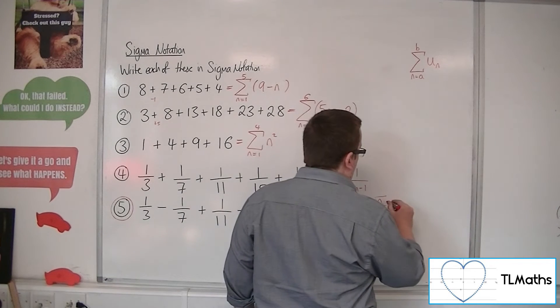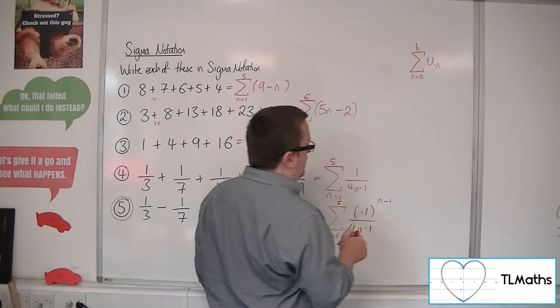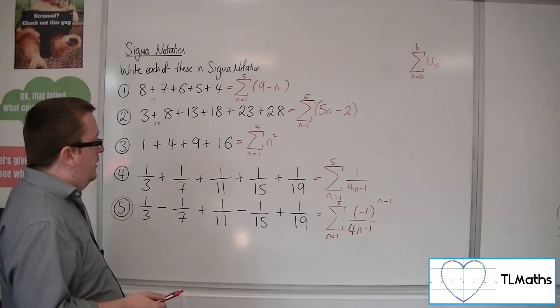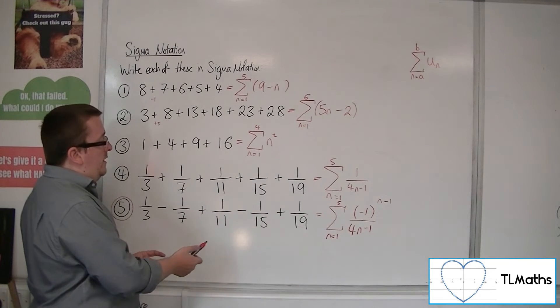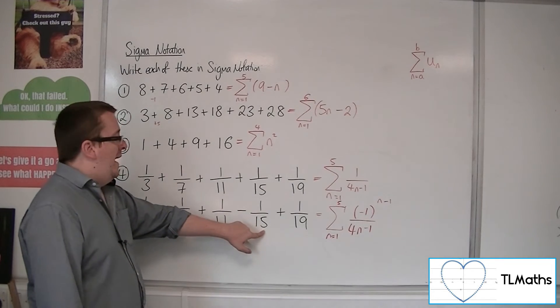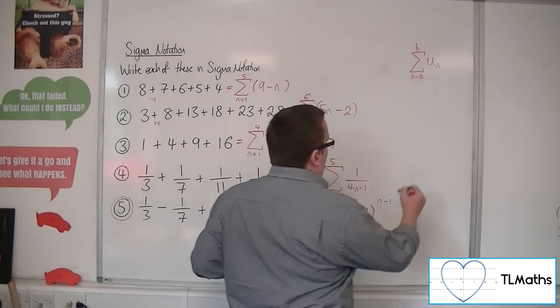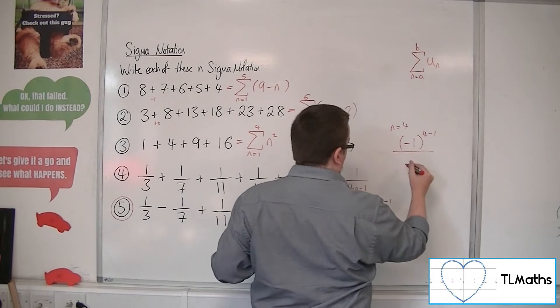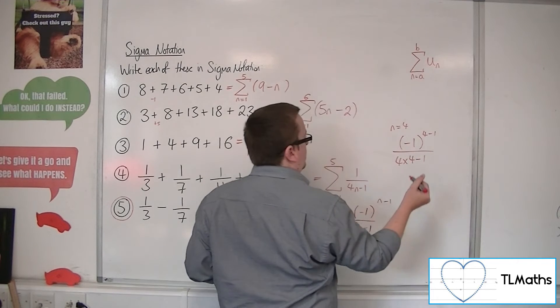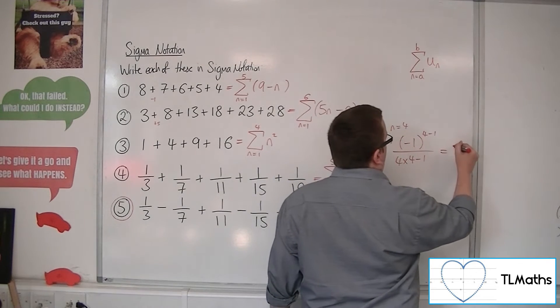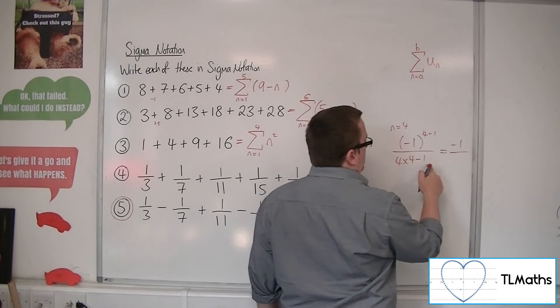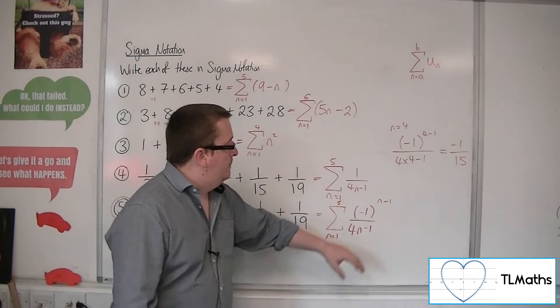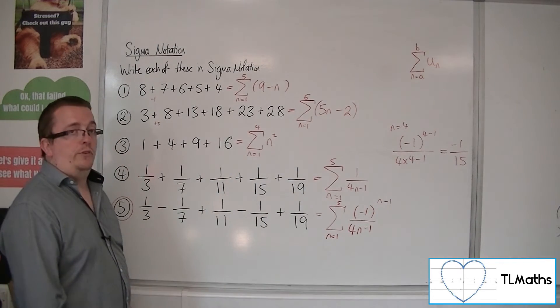You could change that. You could change it to n minus 1 if you wanted to, or n plus 1. Wouldn't really matter as long as you're one position along in either direction. So minus 1 to the power of n minus 1. So if we confirm it for this position here, for n is 4. When n is 4, we get minus 1 to the power of 4 minus 1 over 4 lots of 4 minus 1. So minus 1 to the power of 3 is minus 1. 4 times 4 is 16. Take away 1 is 15. So minus 1 fifteenth. So that is the sigma notation that would go with that series for number 5.